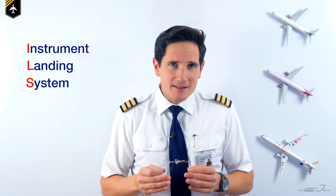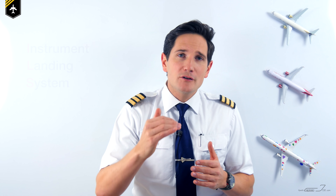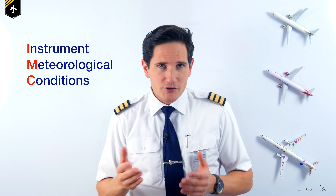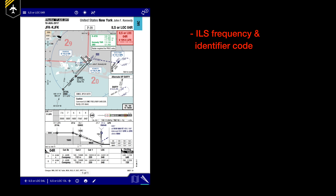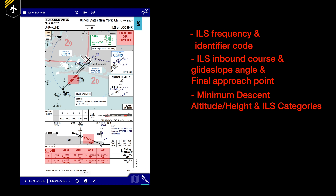So what does ILS stand for? The I for instrument, the L for landing, and the S for system. The instrument landing system is a ground-based radio navigation system giving pilots the lateral and the vertical guidance towards the runway as they are on approach in IMC. To fly an ILS approach, the aircraft has to be fitted with an adequate ILS receiver to display and convert the picked-up signals on the cockpit instruments. Besides that, you need the necessary ILS approach chart with important data like the ILS frequency and identifier code, the ILS inbound course and glide slope angle, the given minimum descent altitude or heights depending on the ILS category, and last but not least the go-around procedure.